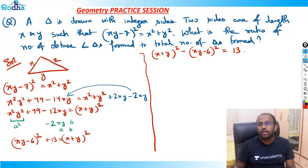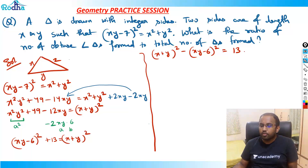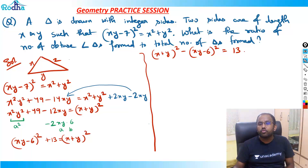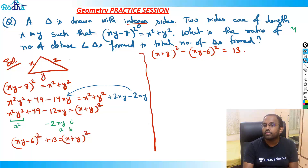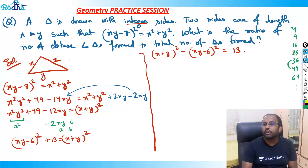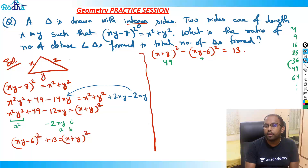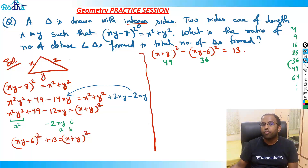Now you can see that A² - B² equals 13. If you think about perfect squares: 4, 9, 16, 25, 36, 49, 64 — the difference of 13 occurs between 36 and 49. So 49 - 36 = 13, meaning (X + Y)² = 49 and (XY - 6)² = 36.